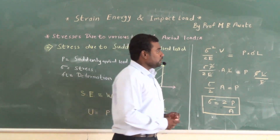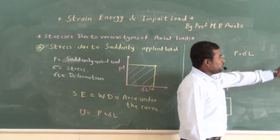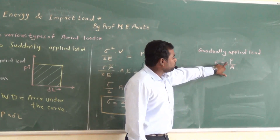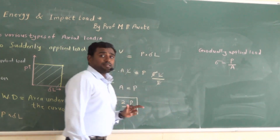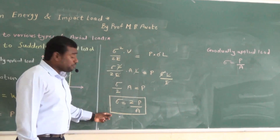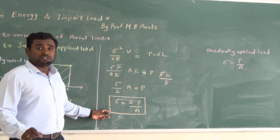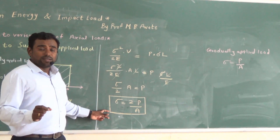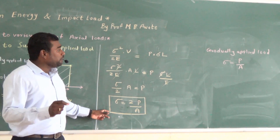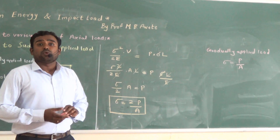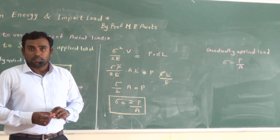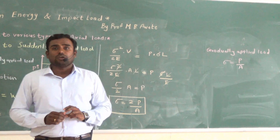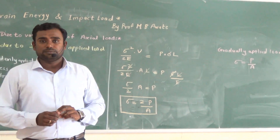We have seen the first case: in the case of gradually applied load, the stress is P by A. Now in the case of suddenly applied load, the value of stress is 2P by A. So I can say that in the case of suddenly applied load, the value of stress is doubled — or the value of stress is twice — as compared to the value of stress when the load is gradually applied. This means the intensity of stress is more in the case of suddenly applied load.